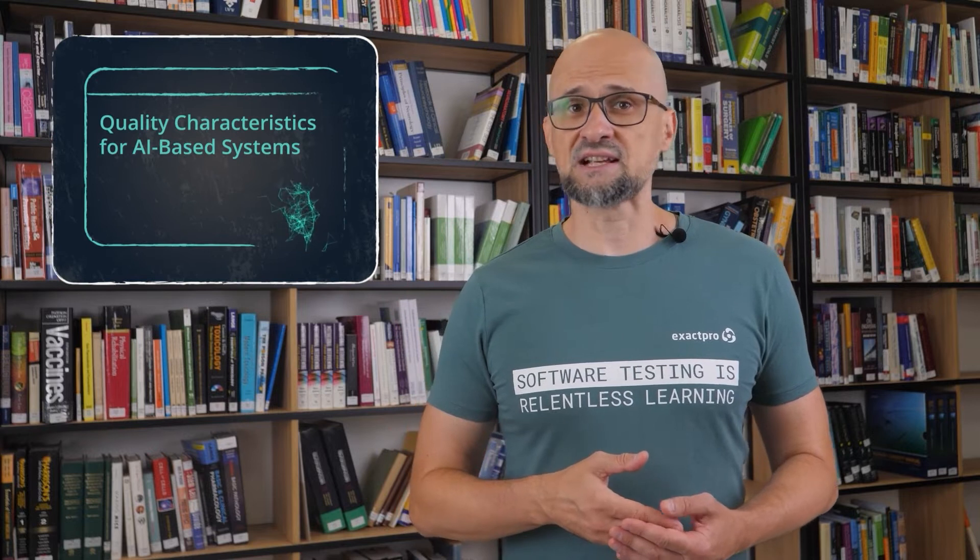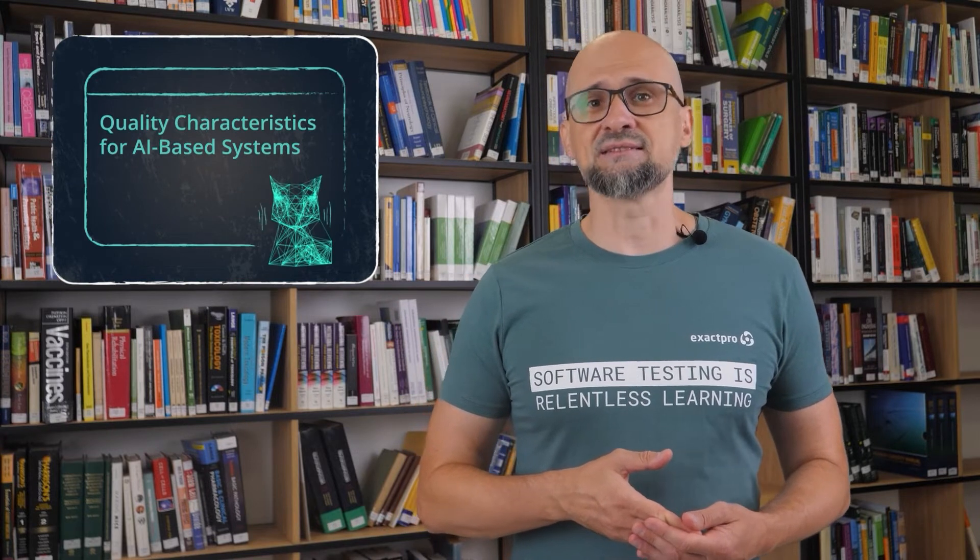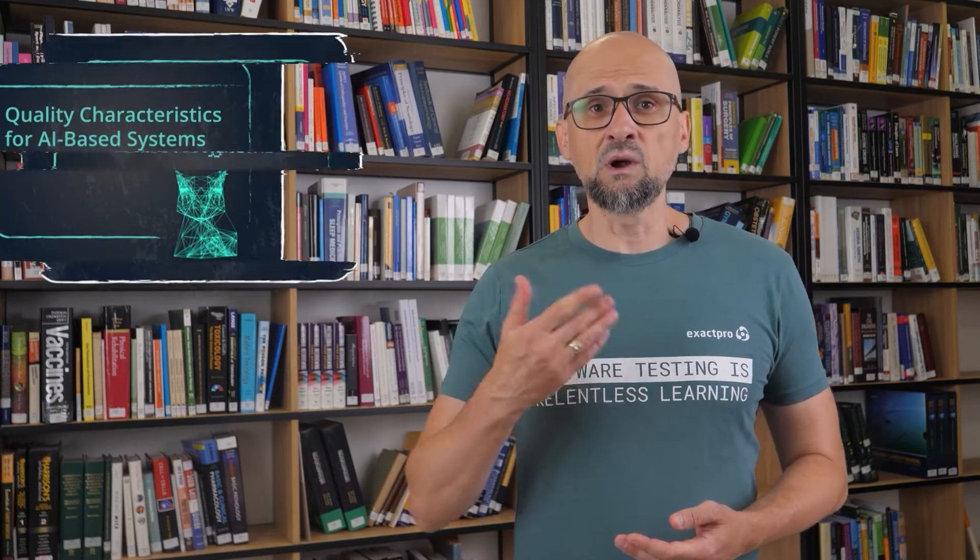We are continuing our series based on the ISTQB Certified Tester AI Testing Syllabus. Today, we will review Chapter 2 called Quality Characteristics for AI-Based Systems. In our previous video, we learned what AI is and got to know the main technologies that can be used in model building. Today, we will go over the basic requirements for AI, and I will try to use some movie references to illustrate it a bit better.